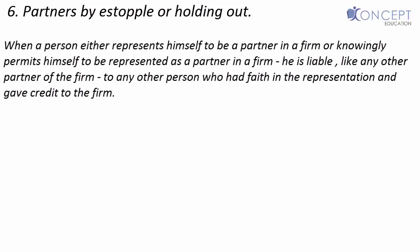Partners by estoppel or holding out: When a person either represents himself to be a partner in a firm, or knowingly permits himself to be represented as a partner in a firm, he is liable like any other partner of the firm to other persons who had faith in that representation and gave credit to the firm.